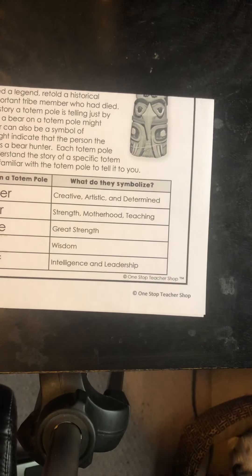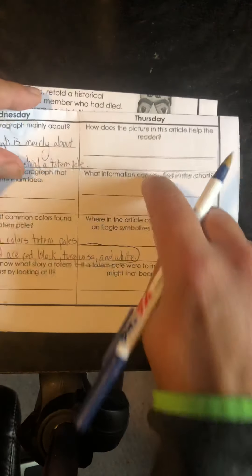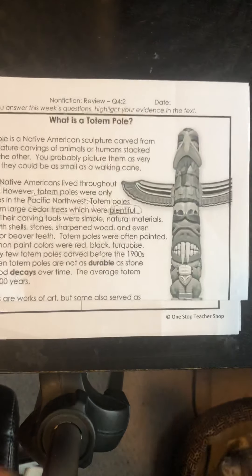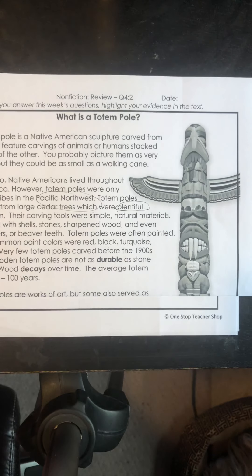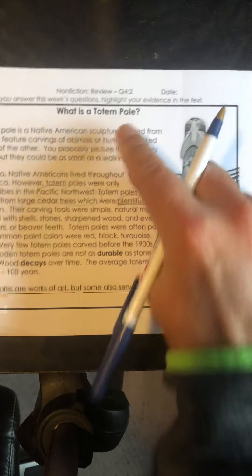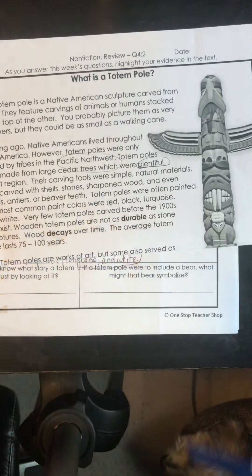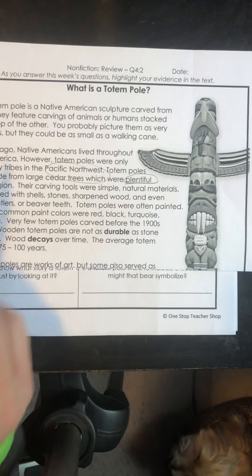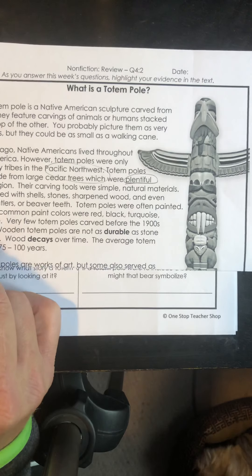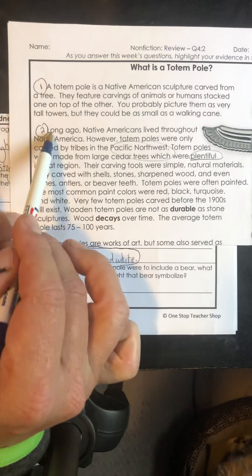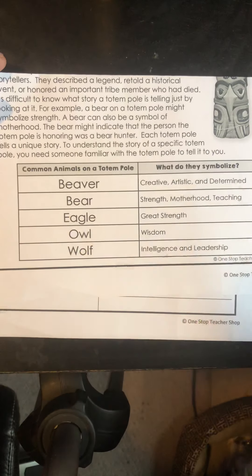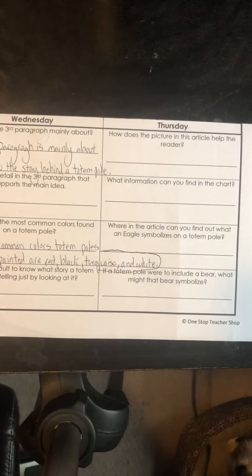We are looking at Thursday's work, so go ahead and have that out. You can see some of the text features here in the article. You have a picture or an illustration, a title, some bolded words here showing you some important vocab. You can see the indentions here — those are the paragraphs. Anytime you indent, it's a new paragraph. You have a table down here showing some important information, so those are text features.